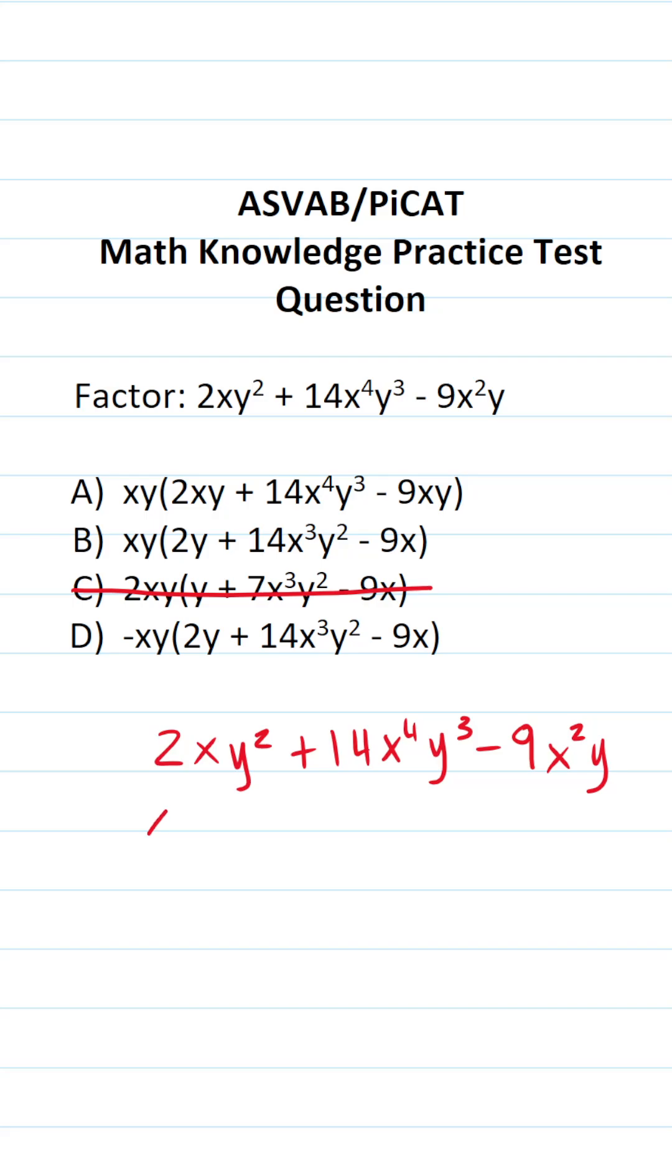Do they all have an x? Here's an x, here's an x, and here's an x. So we can factor out an x. Do each of these terms have a y? Here's a y, here's a y, and here's a y. So we can factor out an xy.